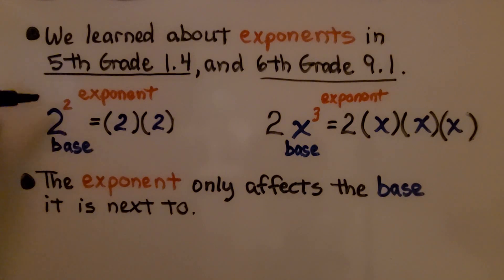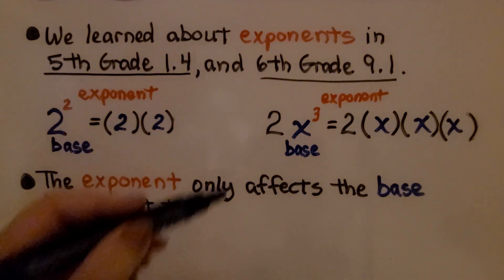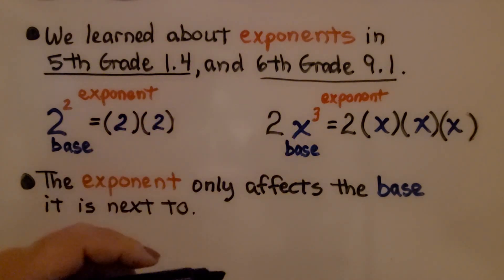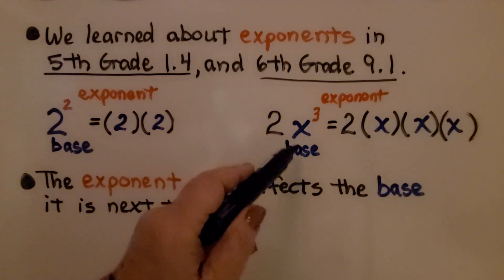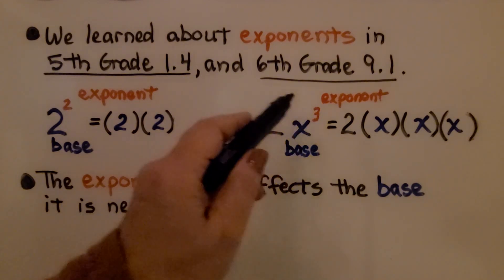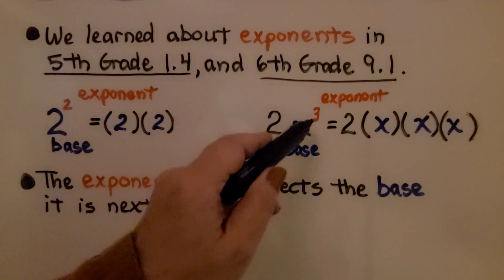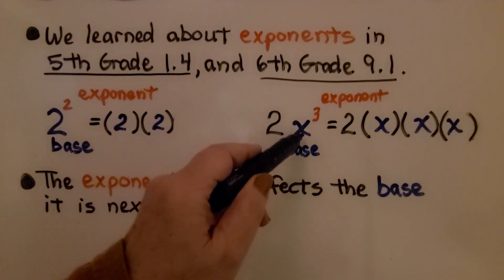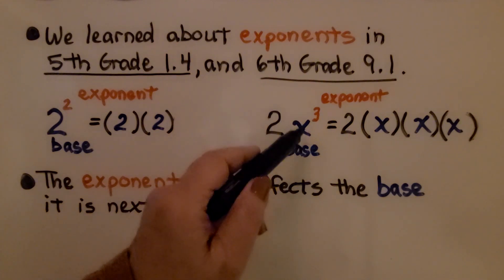This 2 is the base. This 2 is the exponent. The exponent only affects the base it's next to. Here we have 2x to the third power. The exponent only affects the base it is next to, so this 3 does not affect this 2 — it only affects the base x. That means we have 2 times x times x times x.